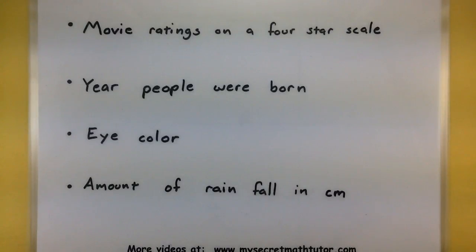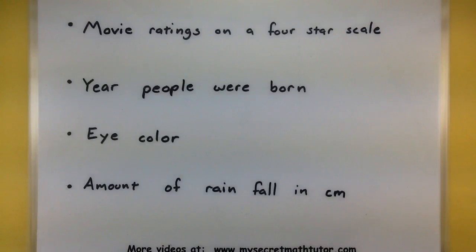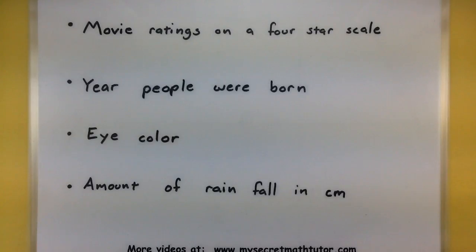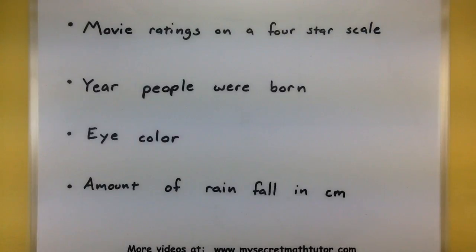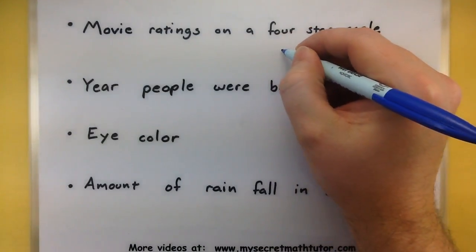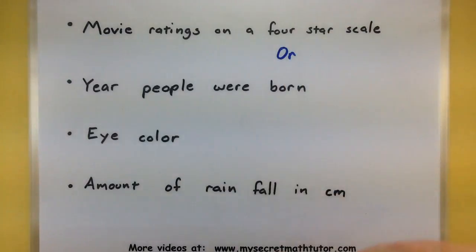Now, if I take two movies and subtract their star values, does the difference make any sense? Let's take a two-star movie and a one-star movie — it only has one additional star. What does that mean in terms of how much better the movie is? Does a two-star movie mean it's twice as good as a one-star movie? The answer is no. I know it's better because it's got two stars, but I can't really quantify how much better it is. So at that point we stop and say this is ordinal — data at the ordinal level of measurement. You can order them, but the differences don't make a lot of sense.